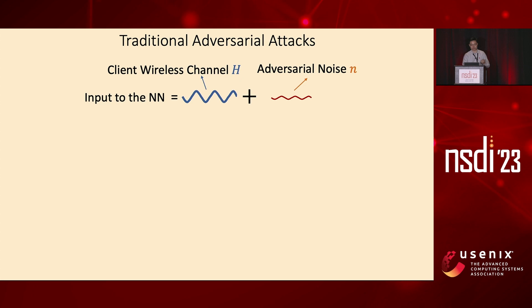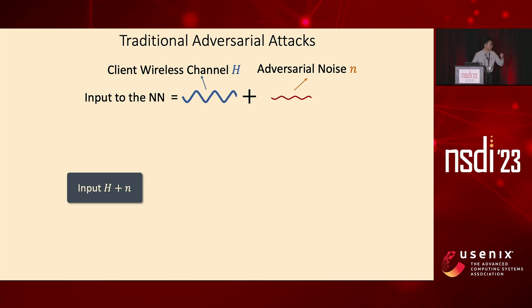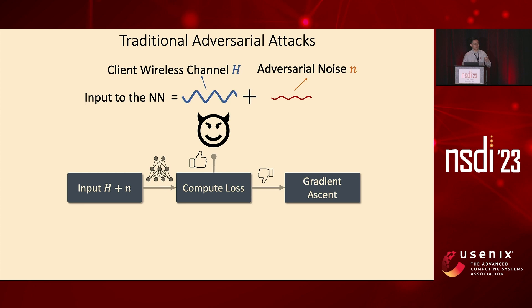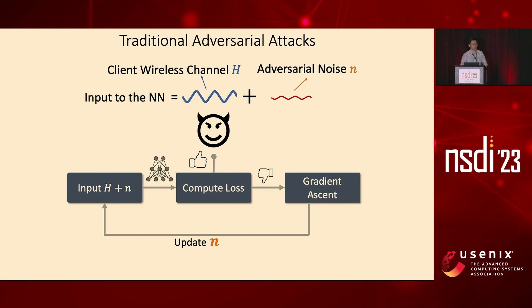Recall that the input to the neural network now becomes the user's wireless channel, denoted as H, plus the adversarial noise signal, denoted as n. Traditional adversarial algorithms work like this: you add adversarial noise n onto the input H, feed H plus n into a neural network model, and it computes the loss function. If this loss is above the threshold, we've found a satisfying noise. If it is lower than the threshold, we conduct gradient ascent — instead of gradient descent used in normal training — to update this adversarial noise n in the direction that increases the loss.